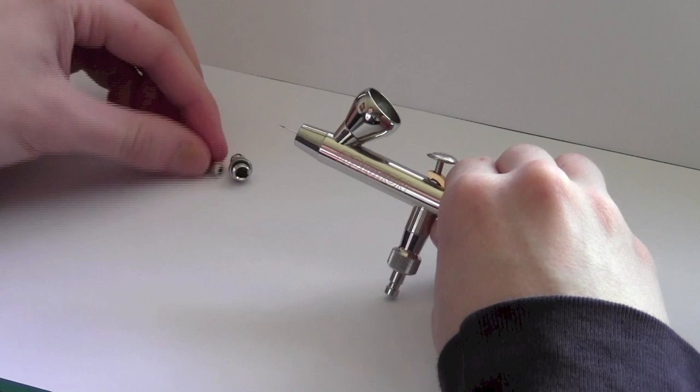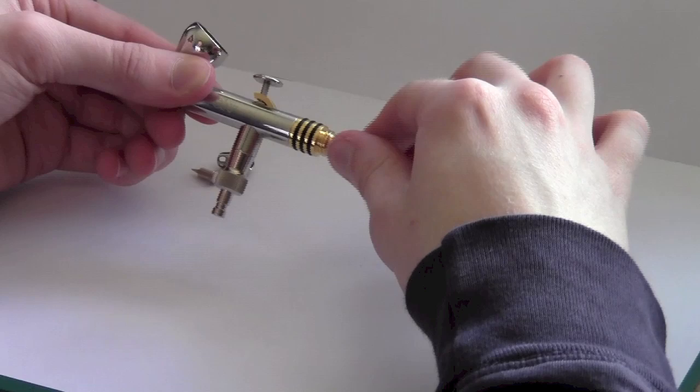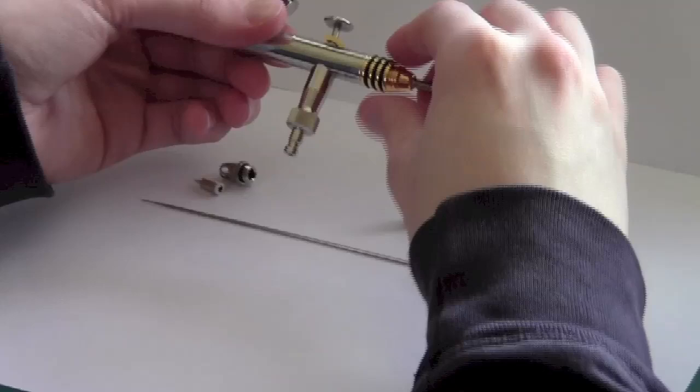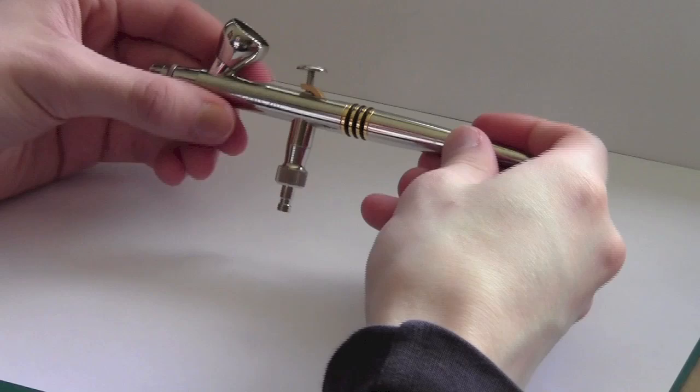Now, when we're taking the airbrush apart, it's important to take these parts off first and then we can go around to the back and we can actually unscrew the needle out. So you just remove this and carefully remove the needle. And that is the parts of the airbrush that are most important, especially when it comes to cleaning.